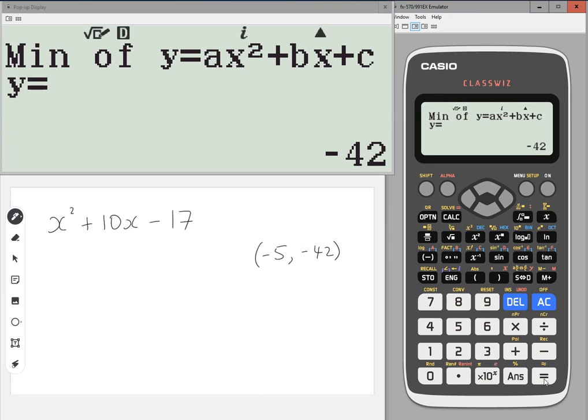And so in complete square form, this must be x plus 5, all squared, take away 42. And so that is completed square form for that quadratic.